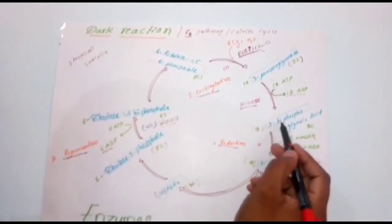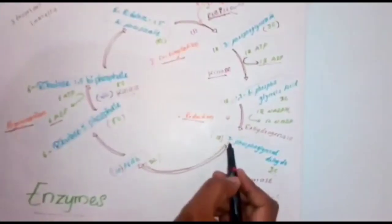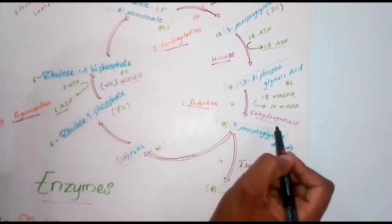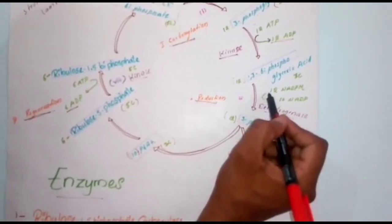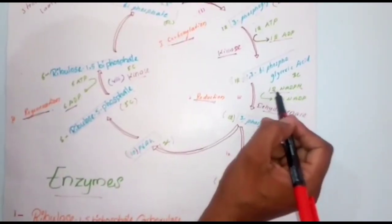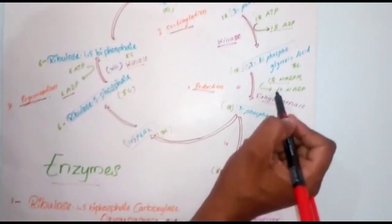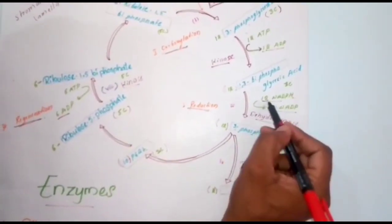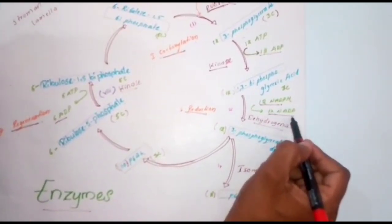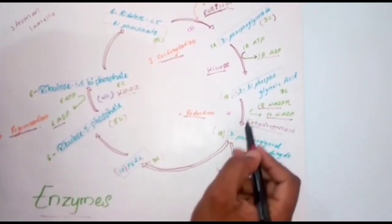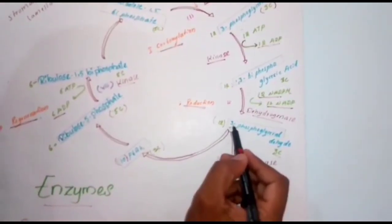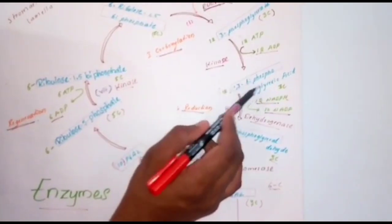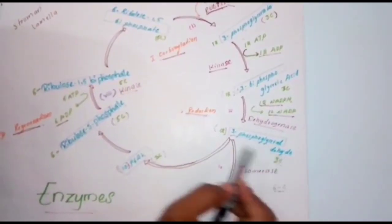Then 1,3-bisphosphoglyceric acid is converted into 3-phosphoglyceraldehyde with the help of dehydrogenase enzyme. This conversion is also possible with energy consumption — 12 NADPH2 are going to be used and converted into 12 NADP. NADPH2 is the high-energy form and NADP is the low-energy form. By this process, the end product — 3-phosphoglyceraldehyde — is produced. This is called reduction.